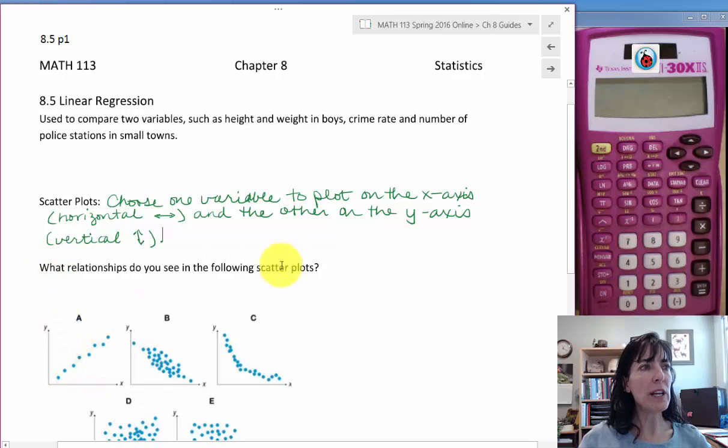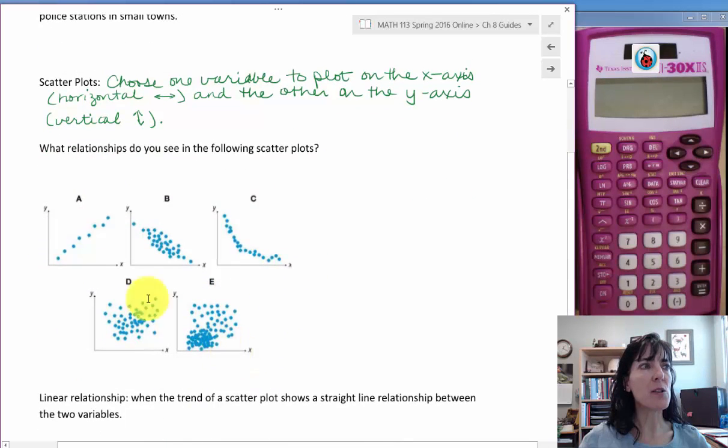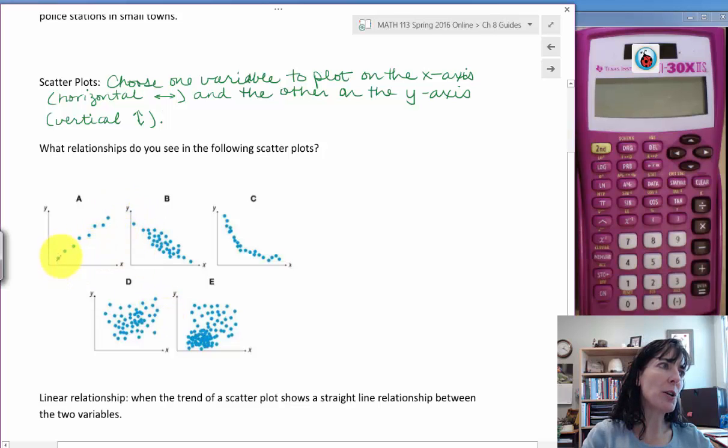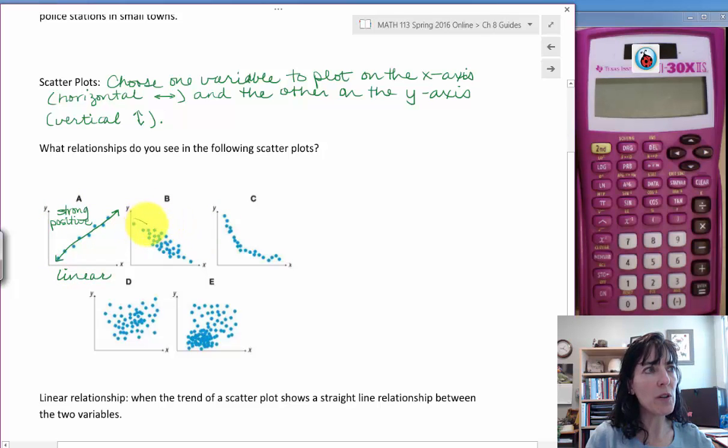What relationships do you see in the following scatter plots? Here we have A, B, C, D, and E. For A, we see a very linear relationship because we could find a line that won't touch all the dots but will be very close to them. We call that linear, and it is also strong positive because the dots are very close to the line.